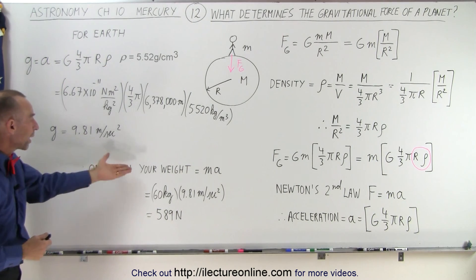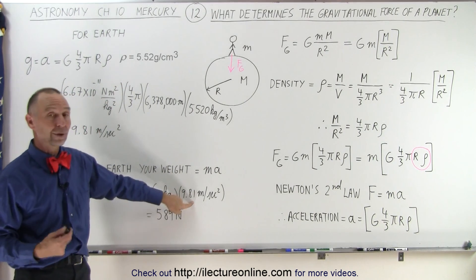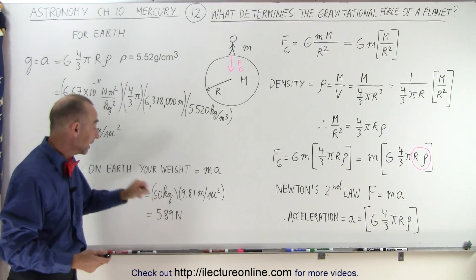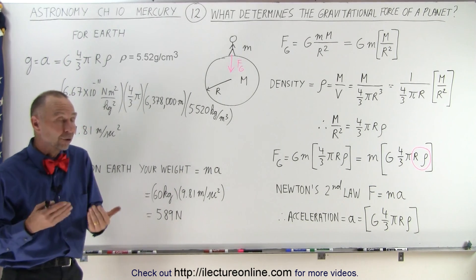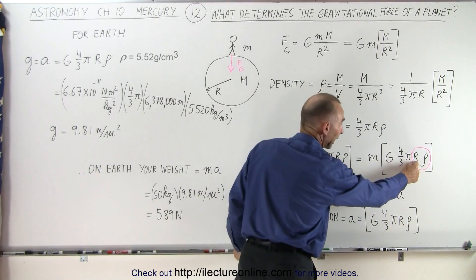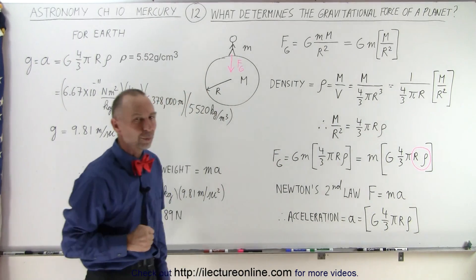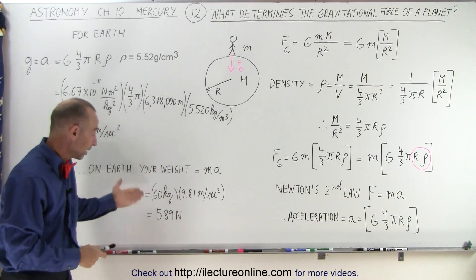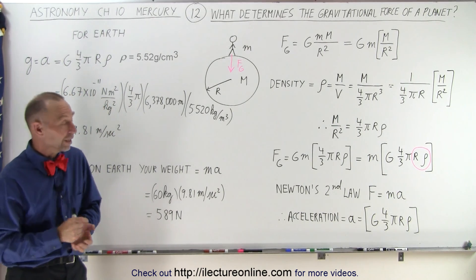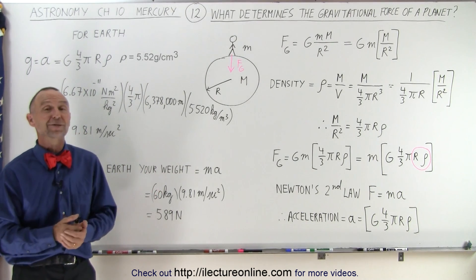On Earth, your weight is your mass times acceleration. If you have a mass of 60 kilograms times the acceleration due to gravity from this equation, you would have a weight of 589 newtons. So to determine the gravitational force on a planet, you simply need to know how big the planet is, how much mass it has, and how dense it is — that determines the acceleration due to gravity and therefore the force of gravity on the surface. In our next video, we'll see how this affects Mercury in comparison to some of the other planets and moons.